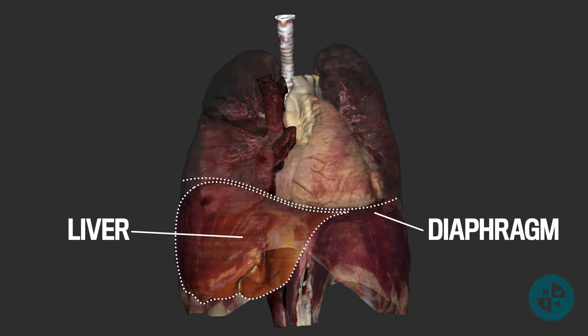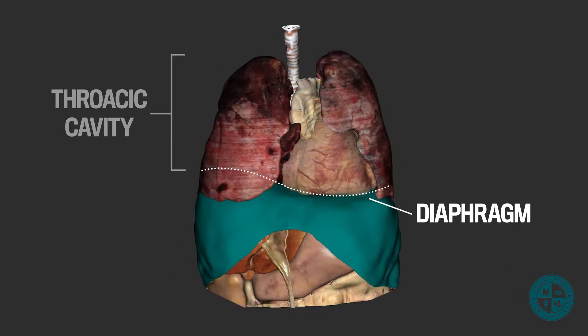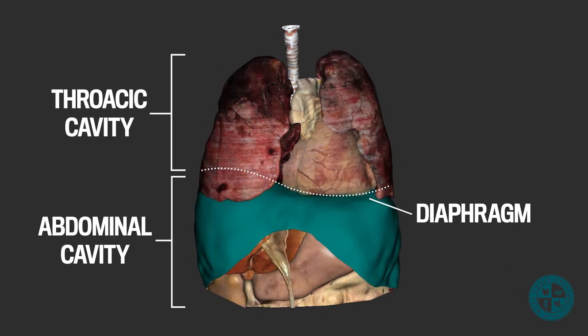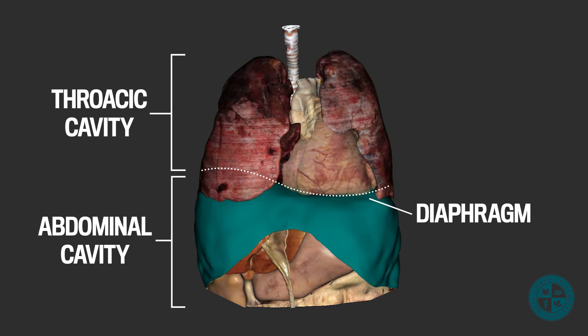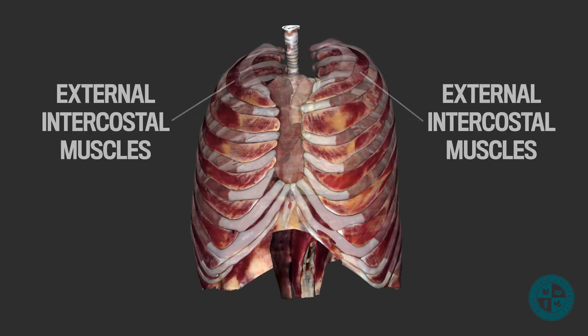The diaphragm and the intercostal muscles are also important muscles for respiration. The diaphragm separates the thoracic cavity from the abdominal cavity. When the diaphragm and external intercostal muscles contract, the volume of the thoracic cavity increases, leading to inspiration.